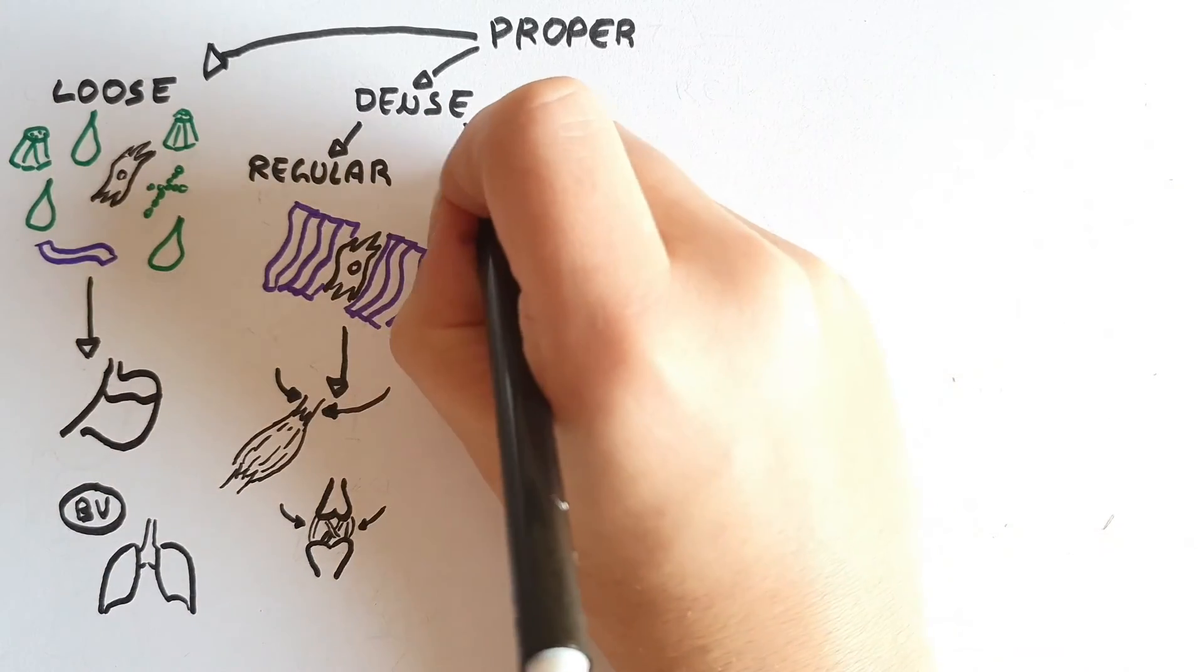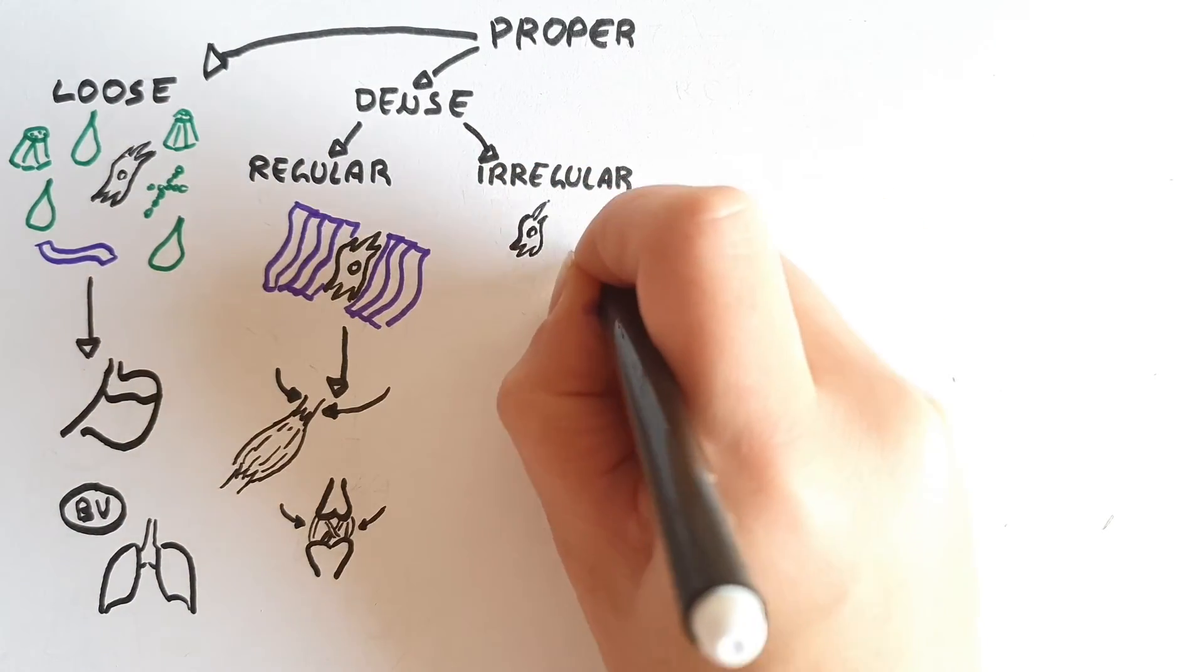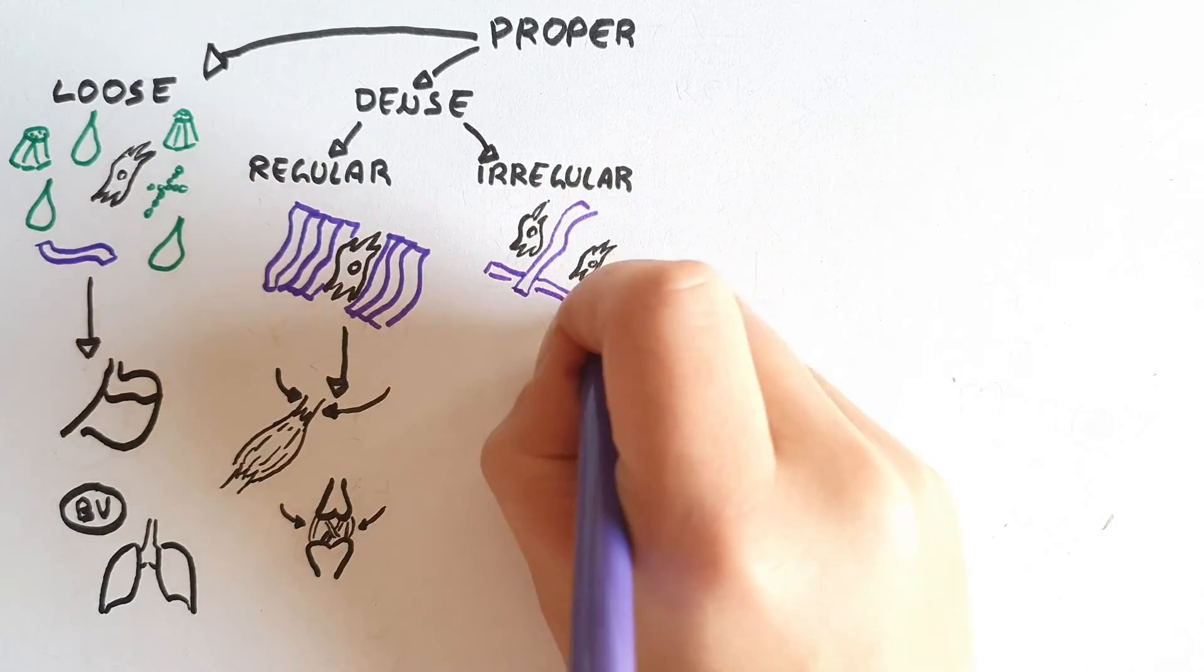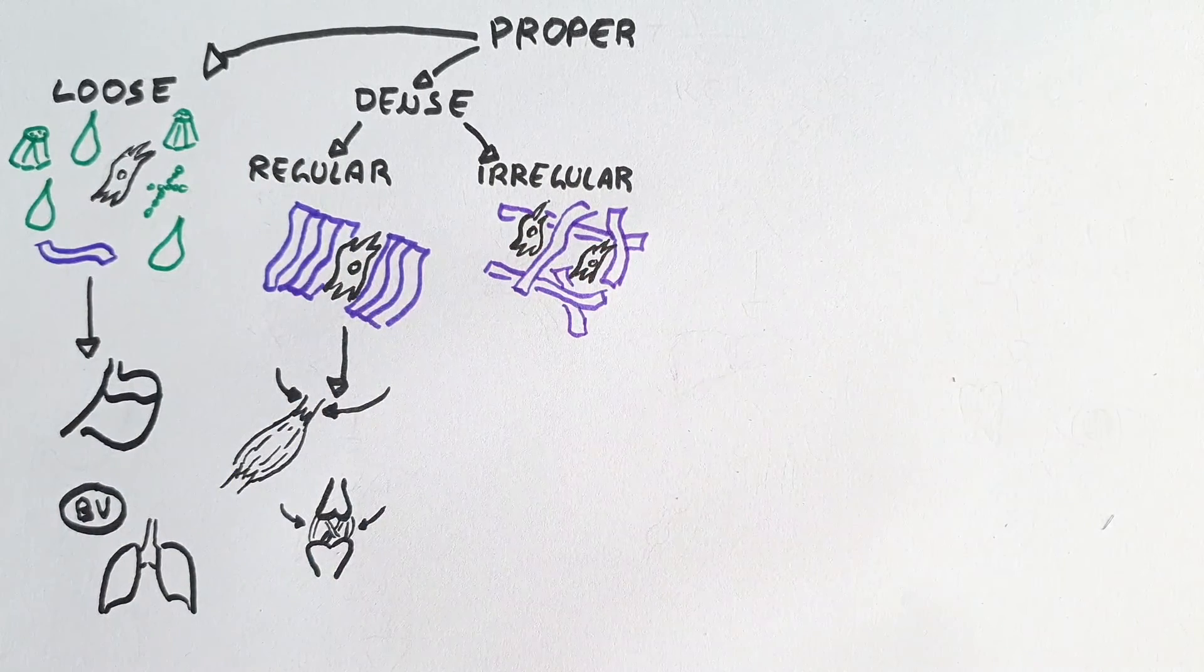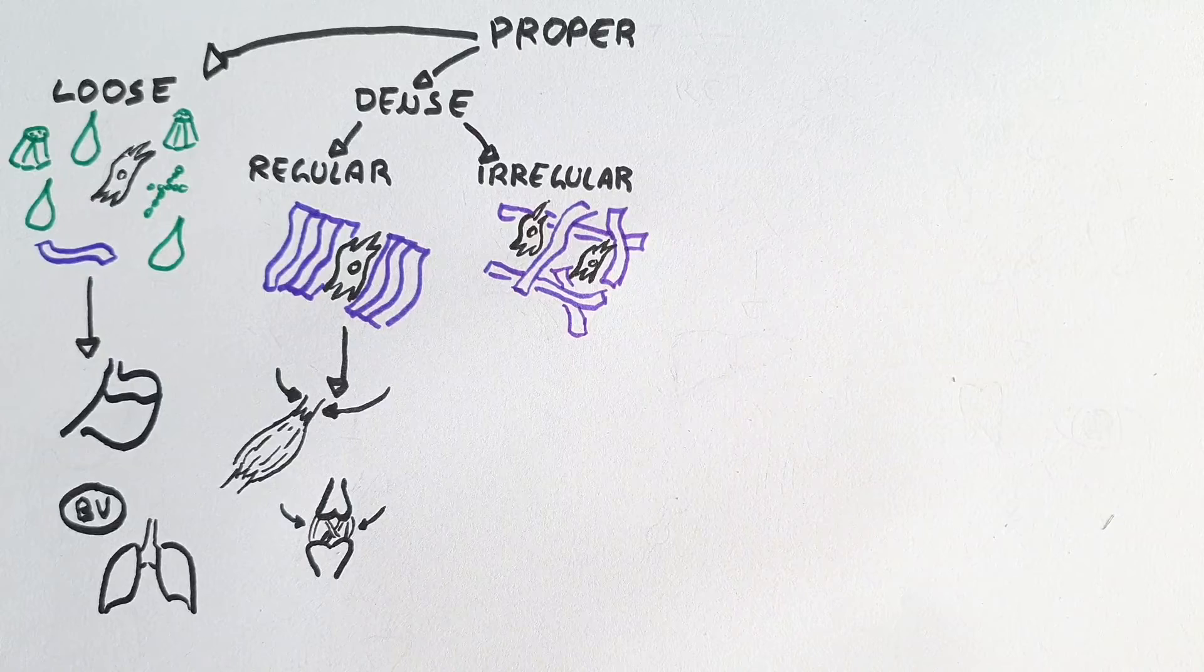In dense irregular, the cellular component is still lower than loose connective tissue, but in this case the collagen fibers are interwoven. The ground substance is scarce and the fibroblasts are isolated by the thick network that characterizes this subtype of connective tissue.